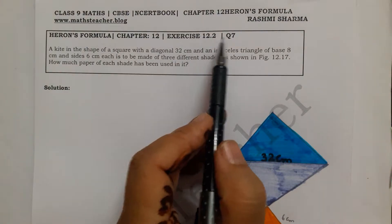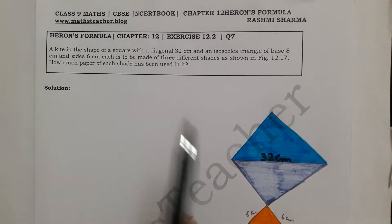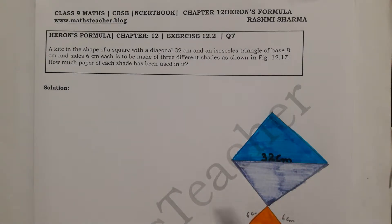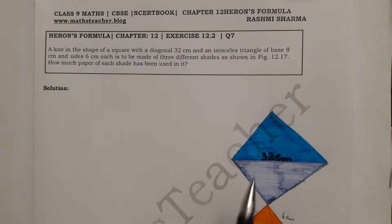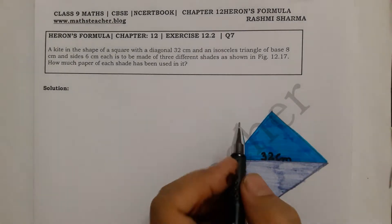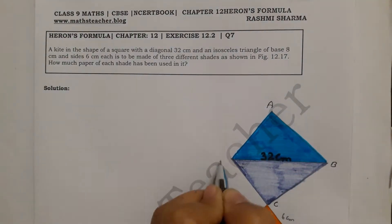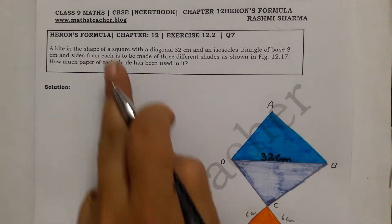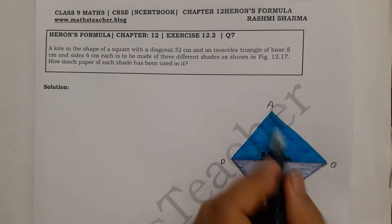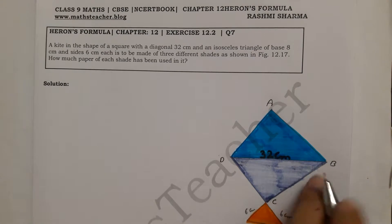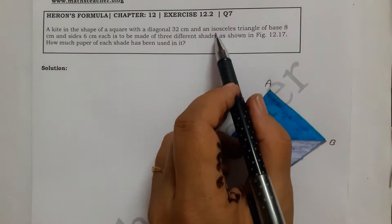In this video we are going to solve Exercise 12.2, Question Number 7. A kite is in the shape of a square with a diagonal of 32 cm. The square has 4 equal sides — A, B, C, D — and we have drawn the diagonal of 32 cm.